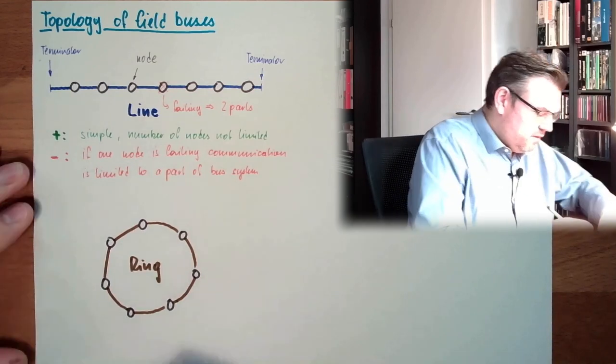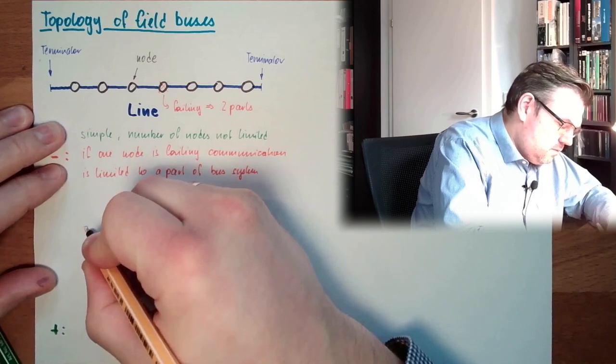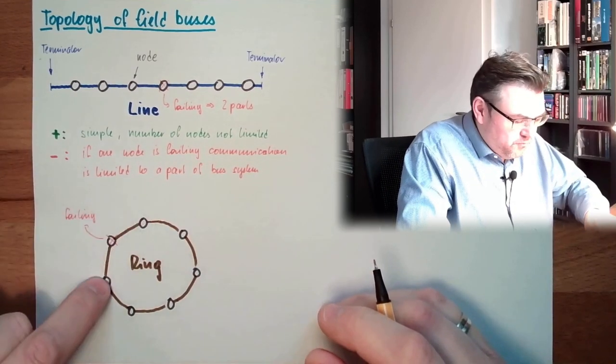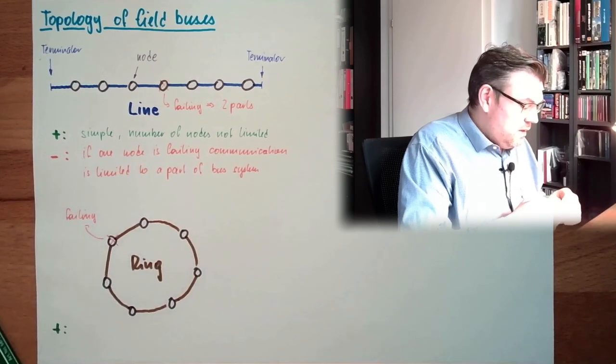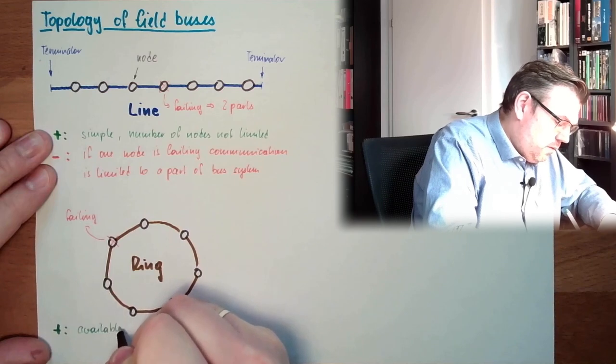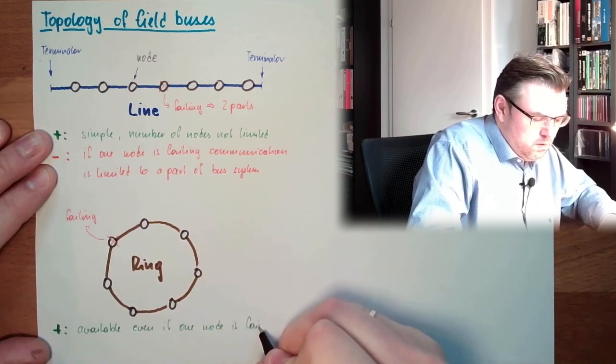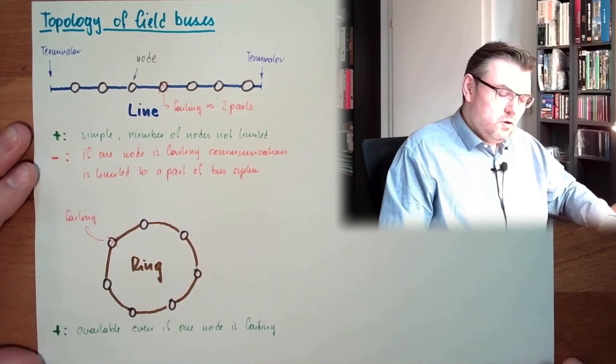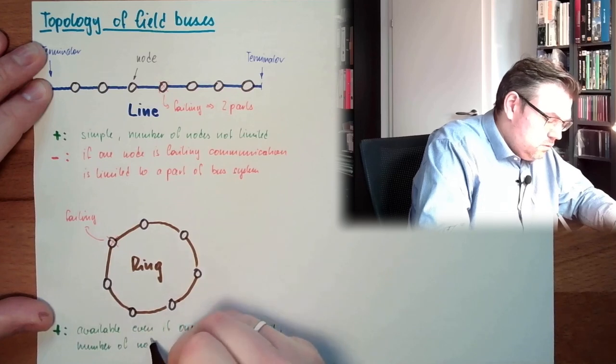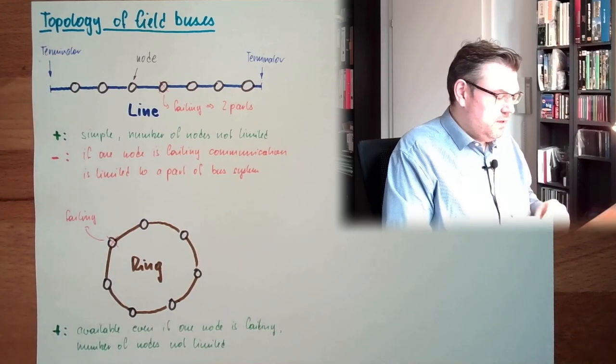What is the benefit of this? If one node is failing, let's say this is failing, this one can still reach this one, not via this direction, because this is failing, but in the other direction. So, availability, even if one node is failing. We have overcome that, and number of nodes not limited. This is the upside of the ring.